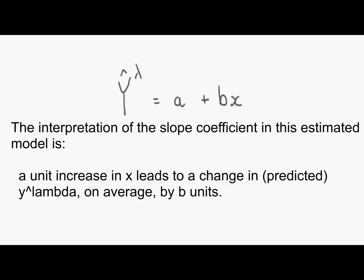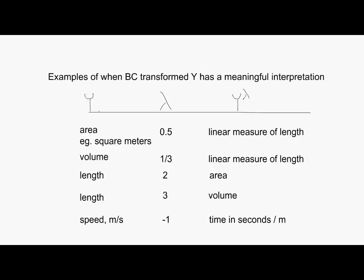First, the transformed Y may have an interpretation for specific lambda, and here are some examples. If Y is an area like in meters squared, then the square root is interpreted as a linear measure of length. Similarly, if Y is volume then the cube root is also a linear measure of length. We can go the other way. If Y is length then Y squared would be area and Y cubed would be volume. If Y is a ratio then the reciprocal is also a ratio but switched around. For example, if Y is speed measured in meters per second, then 1 over Y is time per meter. In these cases it makes sense to choose among these values if your 95% confidence interval for lambda contains the lambda.